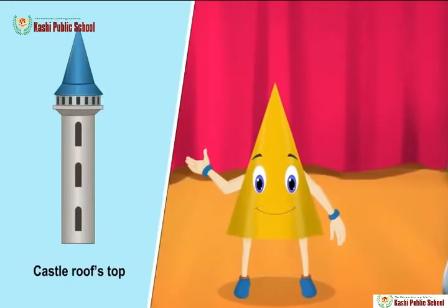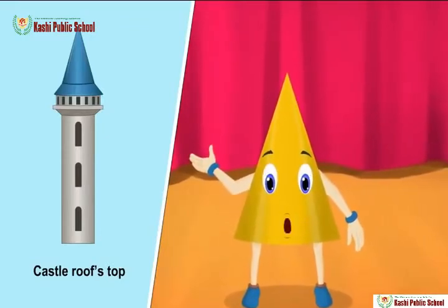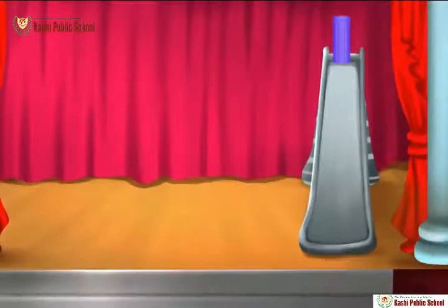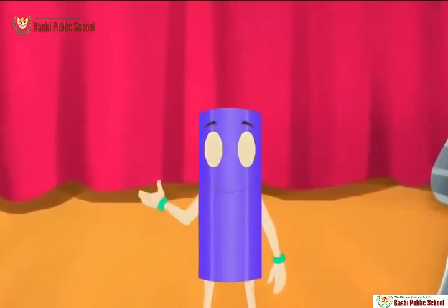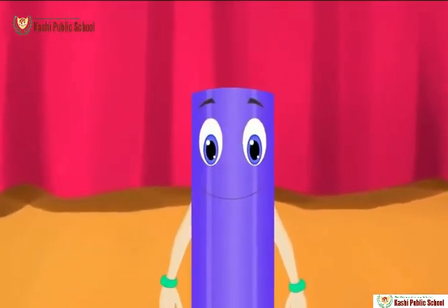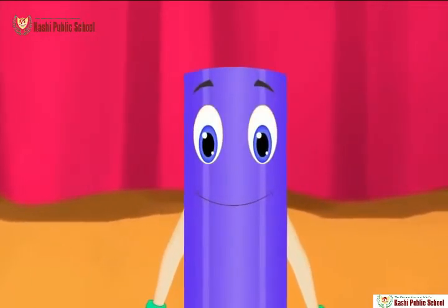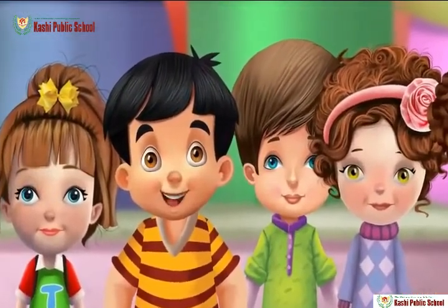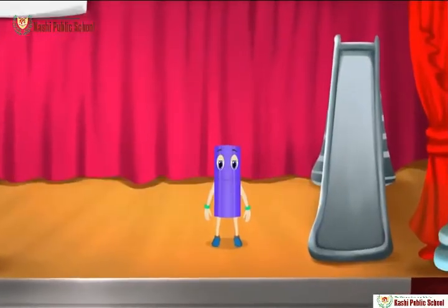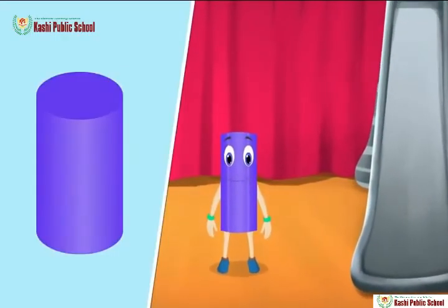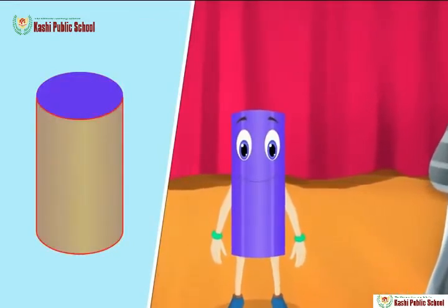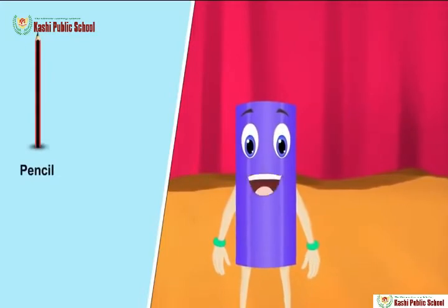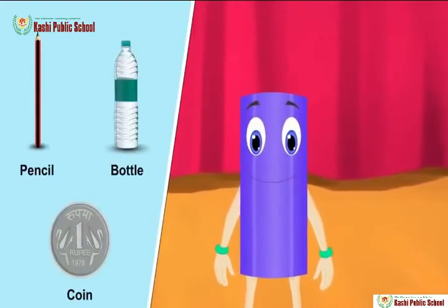Here comes one of our friends who also rolls and slides. Hi all! I both roll and slide, just like my friend cone does. Do you know my special name? Let us guess — it's cylinder! I slide on my flat surface and I roll on my round surface. You can see me in pencils, coins, bottles, etc.